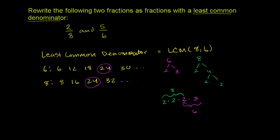If I take 2 times 2 times 2 times 3, that gives me 24. So our least common multiple of 8 and 6, which is also the least common denominator of these two fractions, is going to be 24.